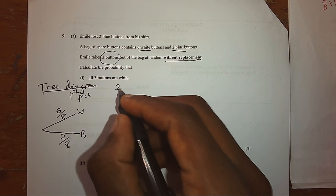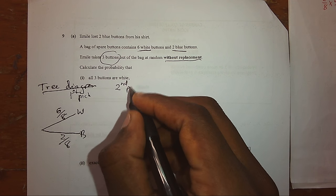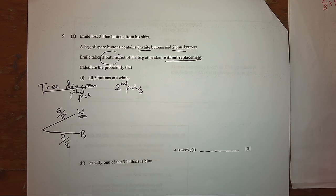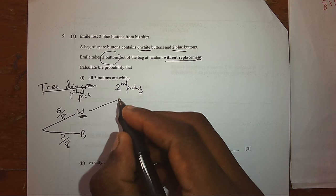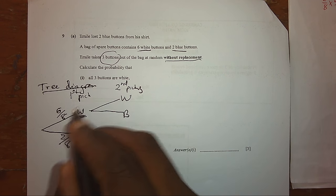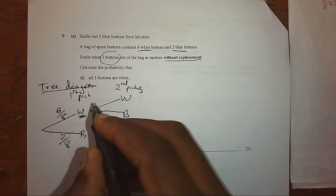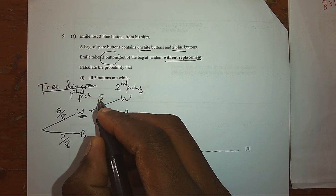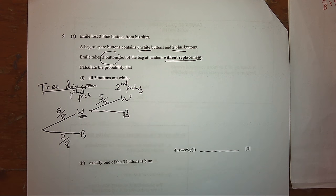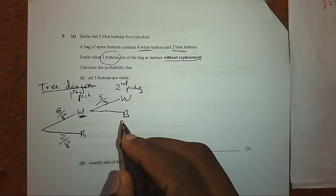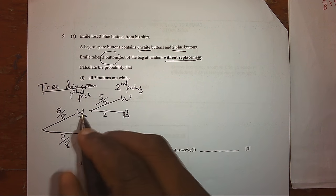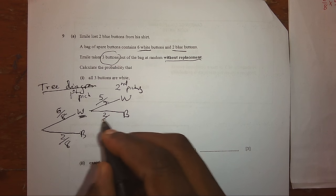In the second picking, having picked the white button first, there is a possibility you can pick a white button again or a blue button. Now, since you picked white first, the number of white buttons have reduced to five, and one button being picked, the total is now seven. However, the blue button was not touched. Since it was not touched, they are still two as they were. But since one button was picked, now the total is seven.